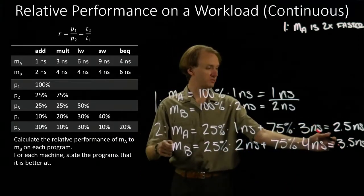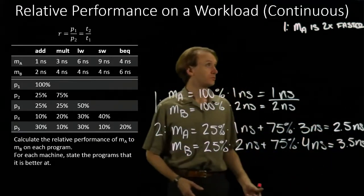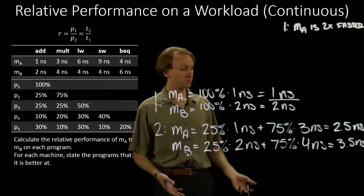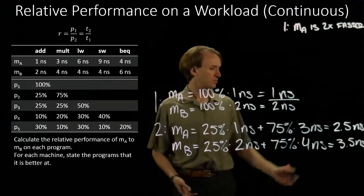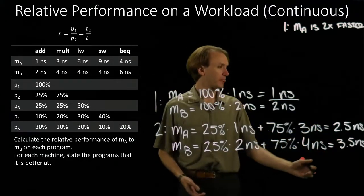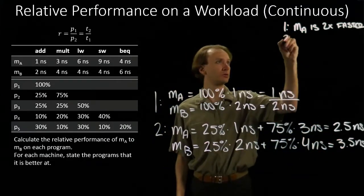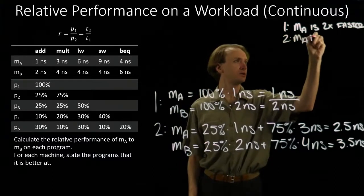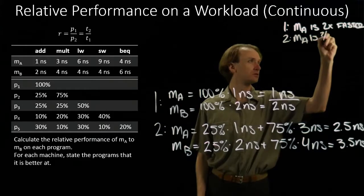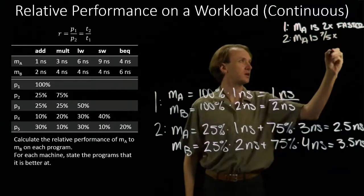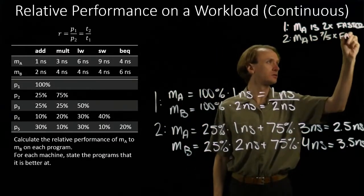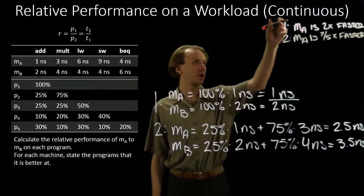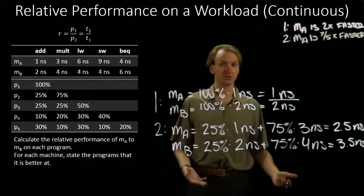Machine A is taking less time than machine B, so machine A is going to be faster. The ratio is 5 over 7, so machine A is 7/5 times faster — not as large a speedup as program 1, but still some improvement.